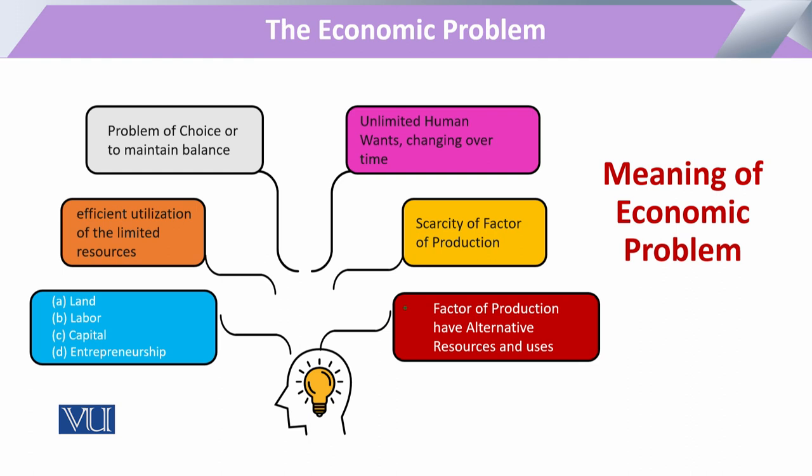All four factors of production mostly have alternative utilization — they can be utilized for one purpose and at the same time they can be utilized for another purpose.